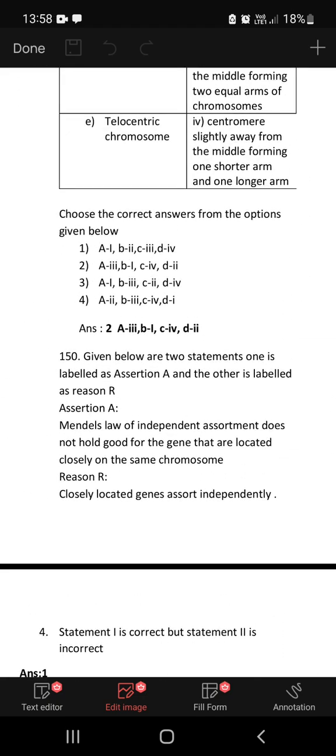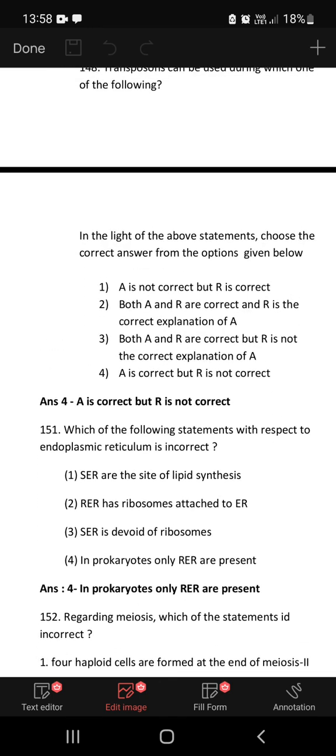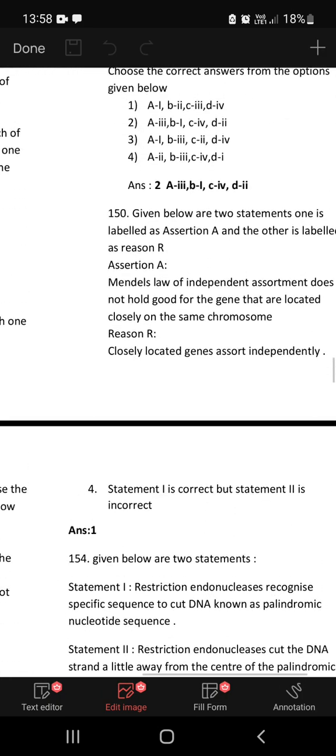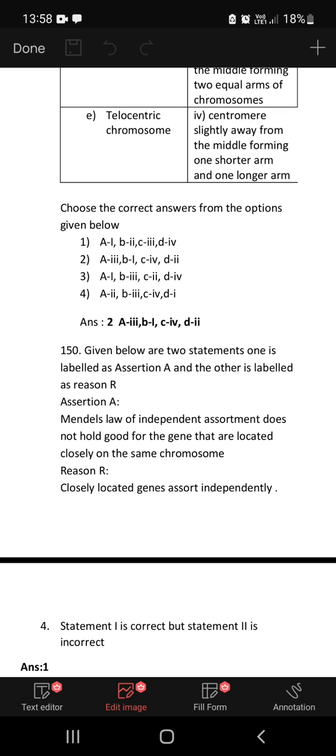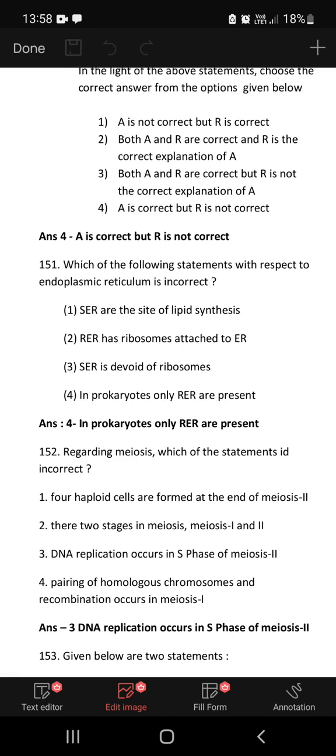Given below are two statements, one labeled as assertion and the other as reason. Mendel's law of independent assortment does not hold good for genes that are located closely on the same chromosome. Here, statement is correct but reason is not correct. Closely located genes assort independently is the wrong option. So A is correct and R is not correct.